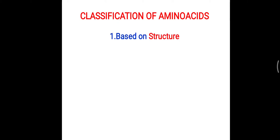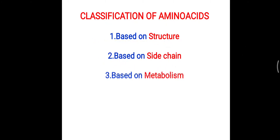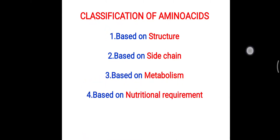Hello friends. Today's topic is about classification of amino acids. We have already seen the classification based on structure and sidechain. Now in this video, we will look at the classification based on metabolism — how amino acids are categorized based on their metabolic pathways.